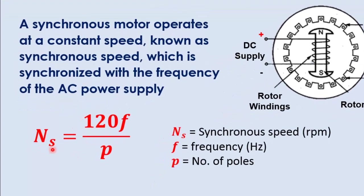The formula of synchronous speed Ns is equal to 120f over p, where f is the supply frequency and p is the number of poles.